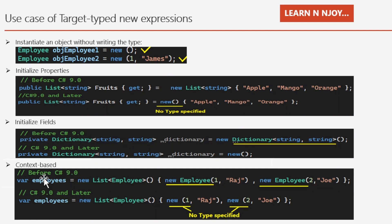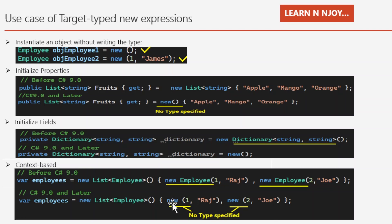The last use case is context-based, for example with collection initializers. We're creating a List<Imply> and adding two Imply objects: new Imply(1, "Raj") and new Imply(2, "Joe"). Before C# 9.0 we repeat the Imply type each time. In C# 9.0, since it's evident that only Imply objects are added to a List<Imply>, we write: List<Imply> implies = new List<Imply> { new(1, "Raj"), new(2, "Joe") }; — no need to repeat the Imply type for every object.